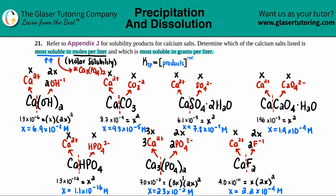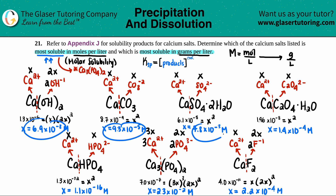Now we have to find which is most soluble in grams per liter. We just have to convert the moles per liter values into grams per liter. Molarity is moles per liter, so to convert from moles per liter to grams per liter it's just a mole-to-gram conversion — we multiply each of the seven x values by the molar mass.